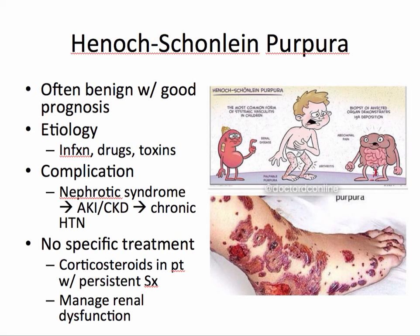To diagnose Henoch-Schönlein purpura, a biopsy of affected organs demonstrates IgA deposition. There is no specific treatment; however, corticosteroids may be used in patients with persistent symptoms, as this is an autoimmune condition. Additionally, renal dysfunction must be managed.